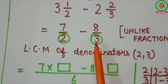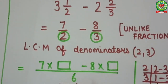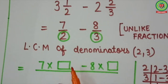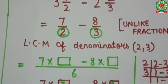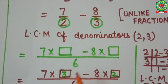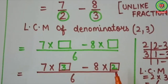Now change the fractions into like fractions. For that we need a common denominator, and here common denominator equals to LCM, that is 6. We will write 7 into box minus 8 into box upon 6, then multiply numerators with a suitable number so that denominators become equivalent to 6. In table of 2, 6 will come at 3, so in the first box I will write 3. In table of 3, 6 will come at 2, so in the second box I will put 2.